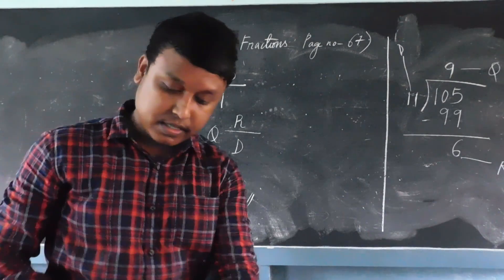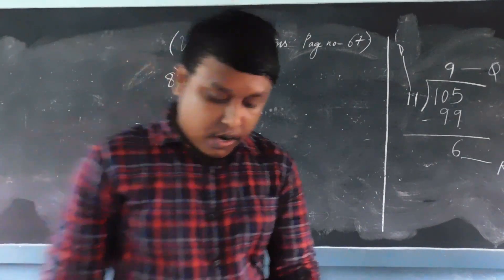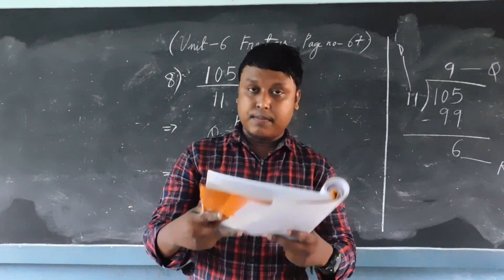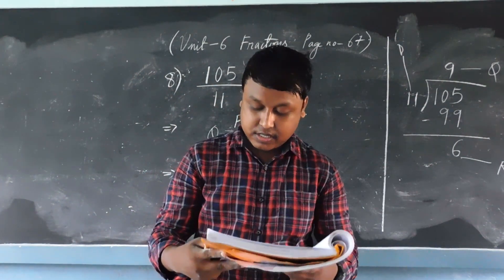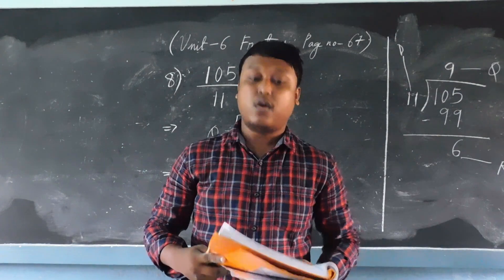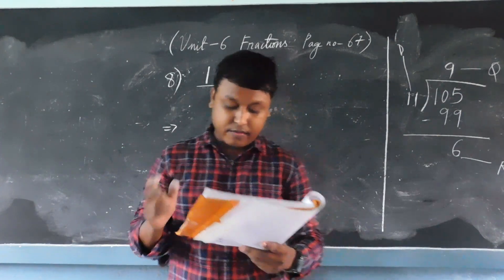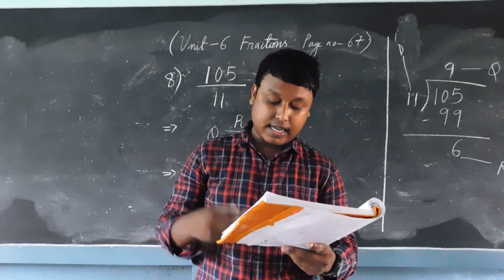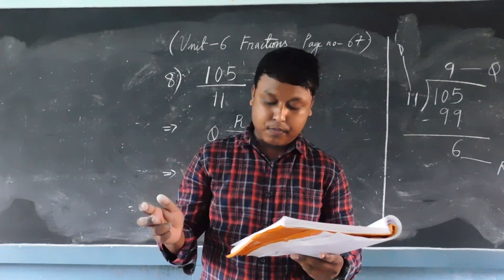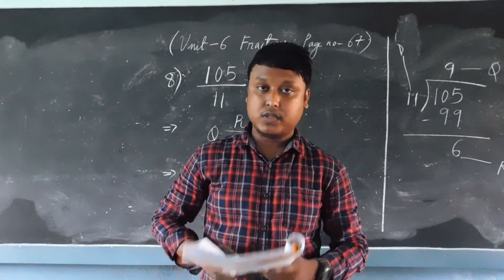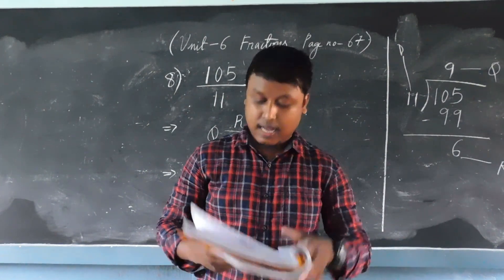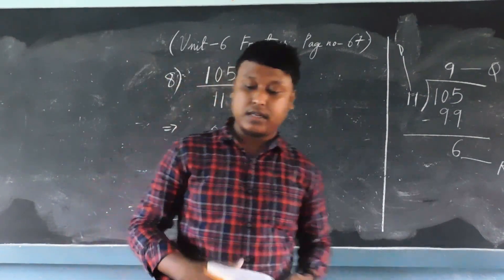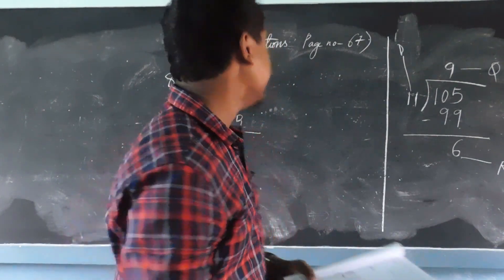Next question — that is: group the following as proper fractions, improper fractions, and mixed numbers. So now we have to arrange the given fractions into proper, improper, and mixed number categories. Before we solve the answer, let me first write all the fractions on the board so that it will be clear to you.